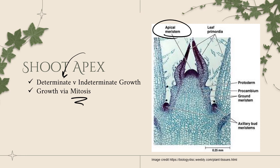The apical meristem and axillary bud meristems show indeterminate growth — the plant is just going to grow and grow and grow until something happens: it runs out of space, it runs out of nutrients, or humans chop it down.